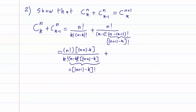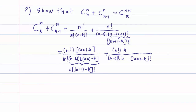Now for the second part, here we have k minus 1 and we want k. So we are going to multiply the top and the bottom by k. So we have n factorial times k at the top, and k minus 1 factorial times k — which equals k factorial — times n plus 1 minus k factorial at the bottom.